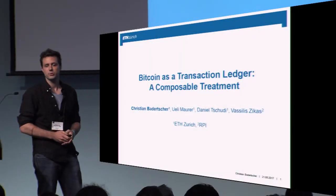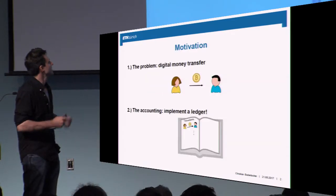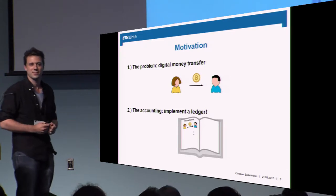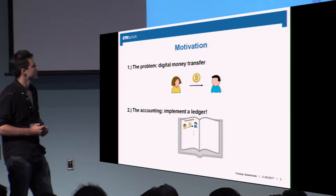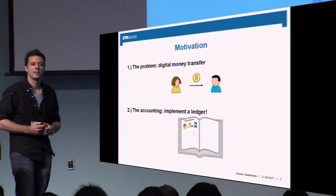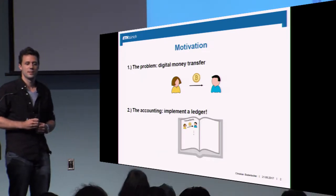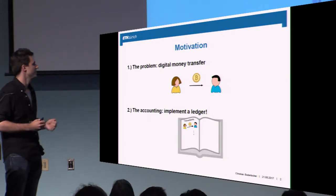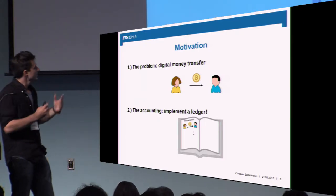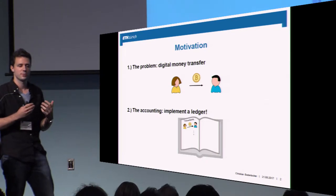What Nakamoto's protocol initially wanted to solve was very concrete. The initial motivation was implementing the accounting of money transactions. The initial problem was that Alice wants to transfer some money to Bob, but somebody has to do the accounting. If you don't want to trust a single entity, then you have to implement such a ledger in a distributed manner, and Nakamoto's protocol, as we have seen in the previous talk, is one method to achieve this. It's not surprising then that people started to think about what is actually the service that Bitcoin can export to applications and higher level protocols.